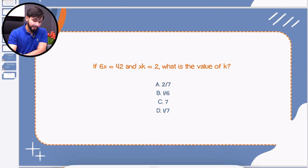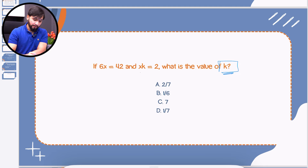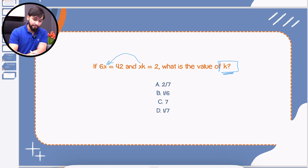The question is: if 6x equals 42 and xk equals 2, what is the value of k? We are looking for the value of k. What we will do is substitute — first we isolate x from the second equation, and then we put the value of x into the first expression to find the value of k.